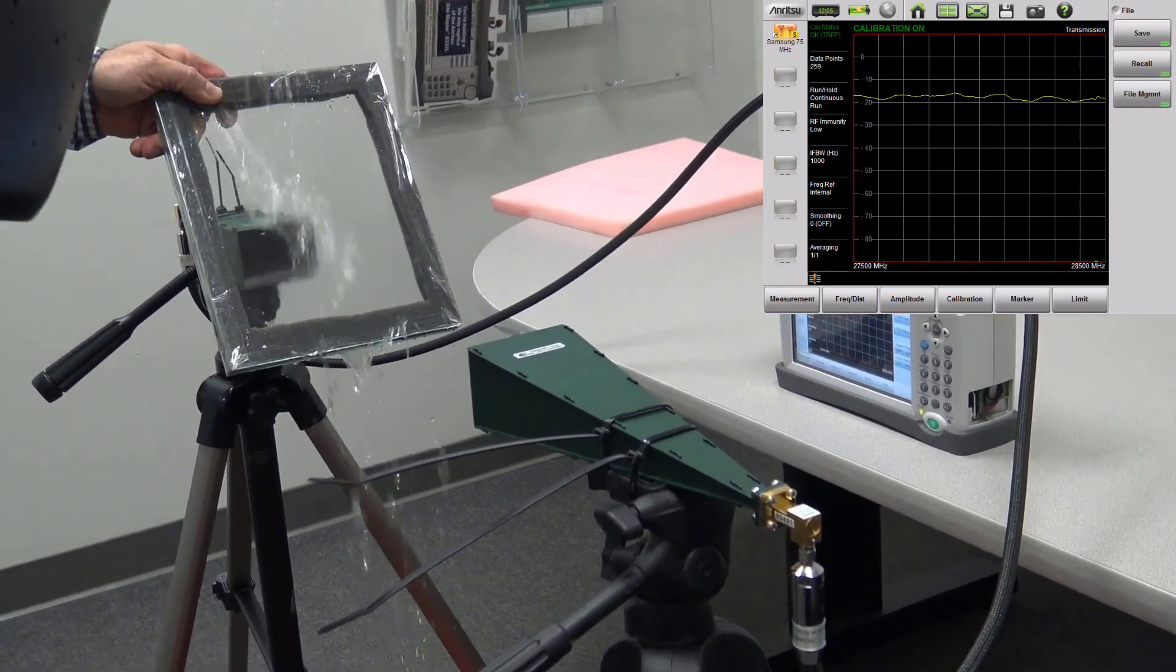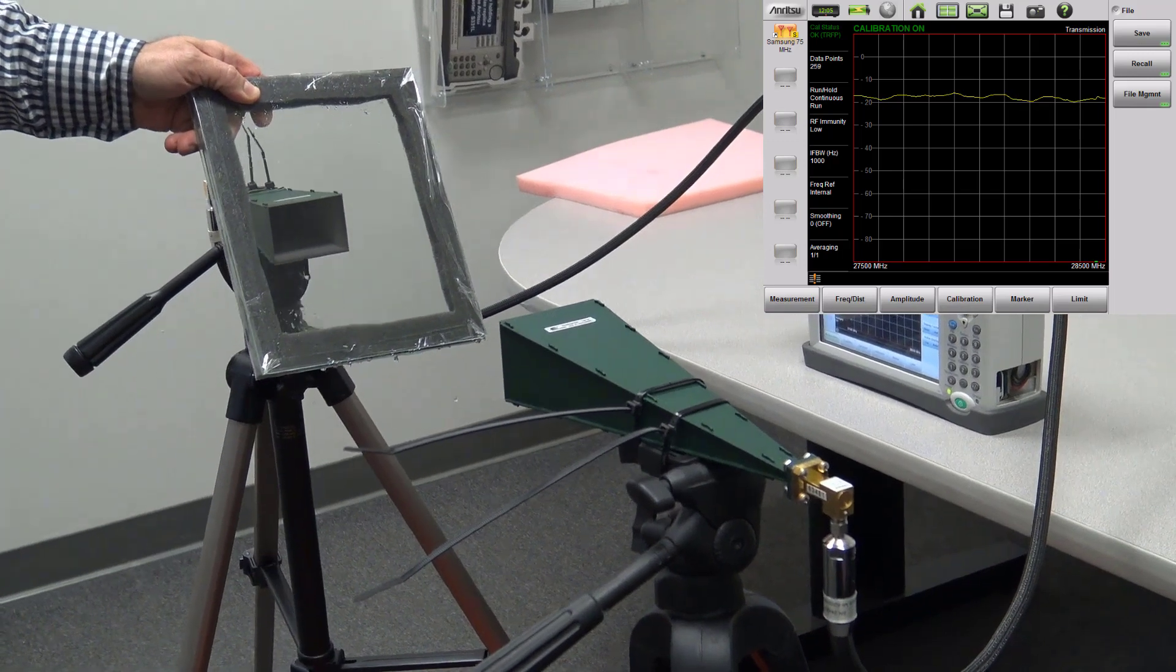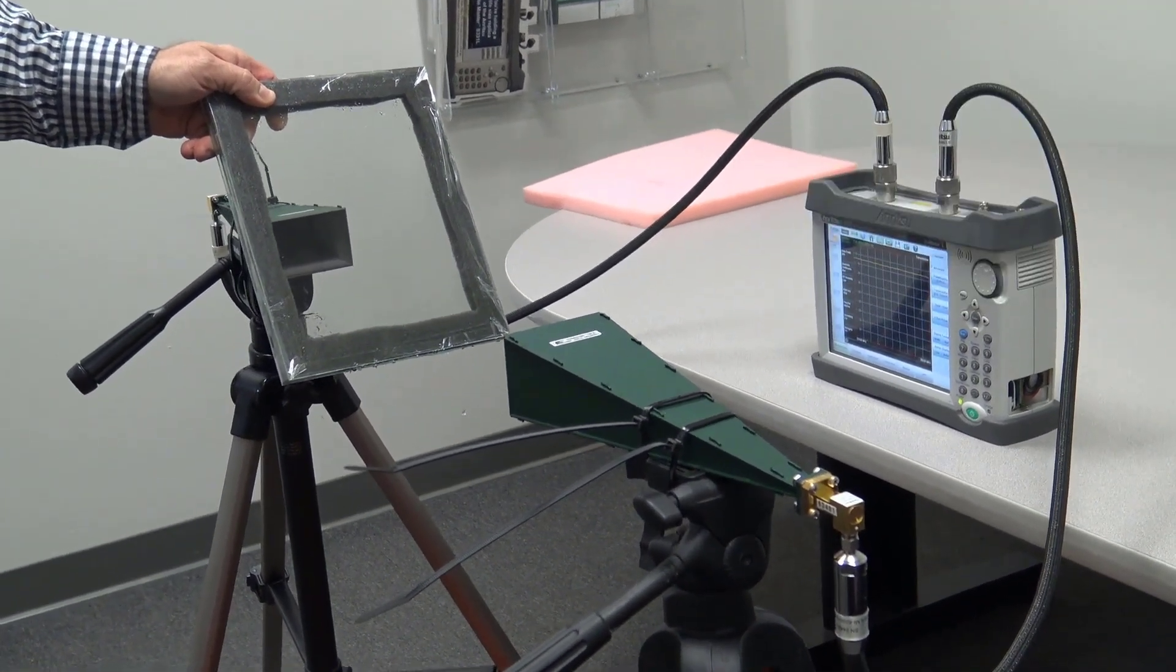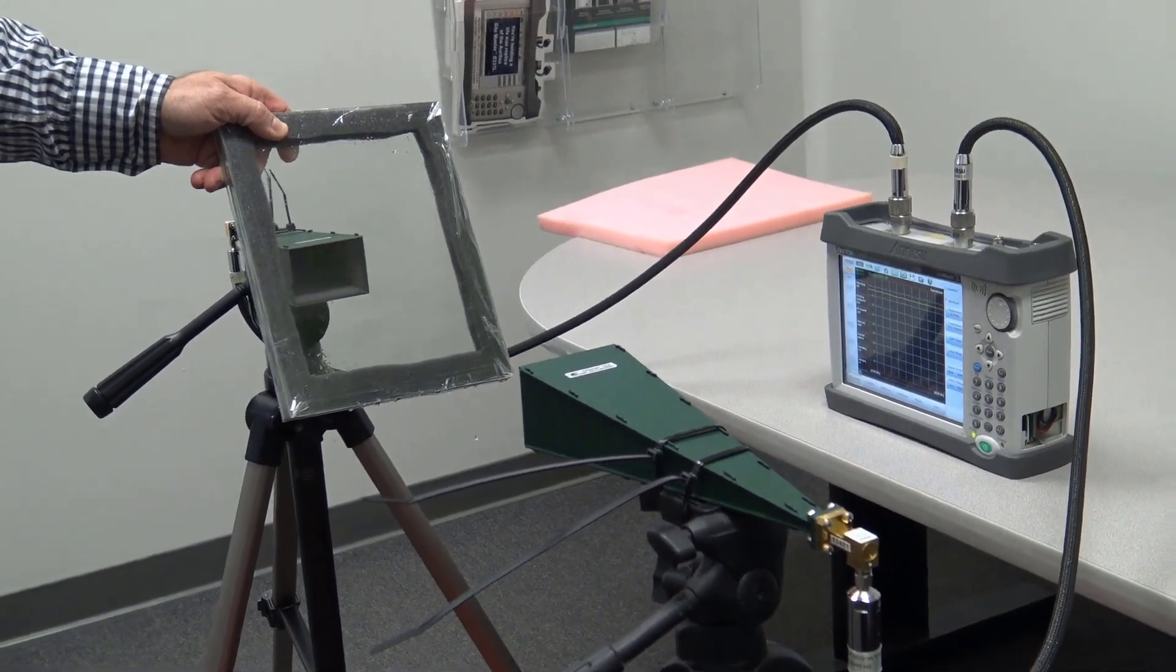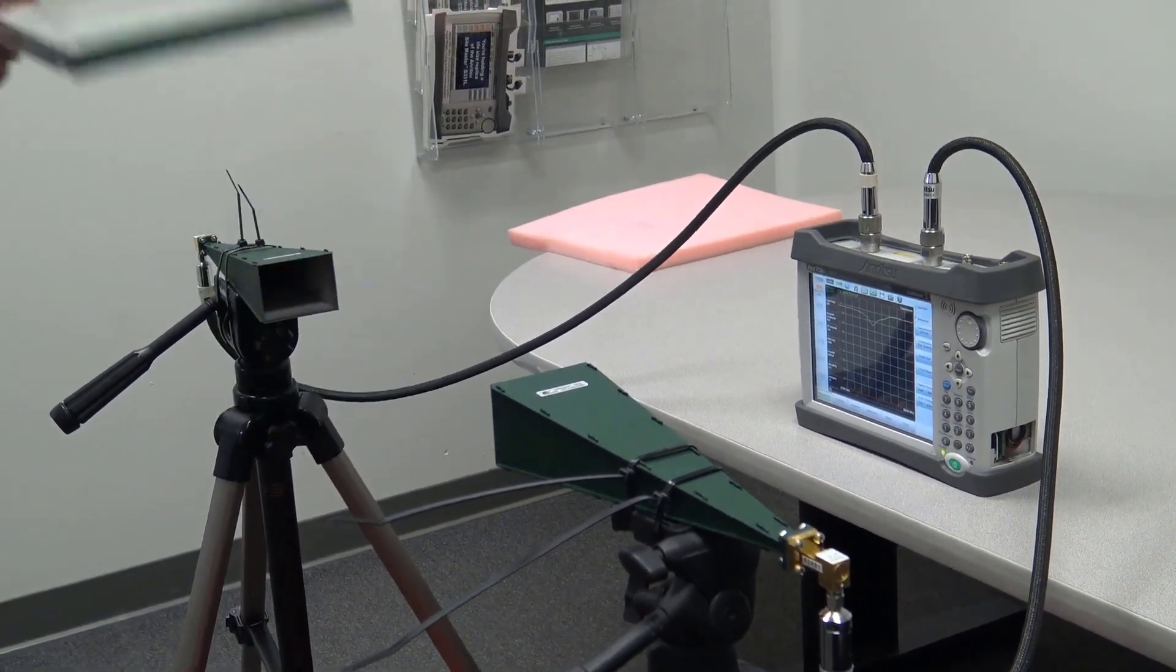Again, we're ranging from 10 to 20 dB of loss because of that little bit of water that's been sheeting on the glass. And you can see that we still have about 4 or 5 dB of loss, whereas when it was dry, it was less than that.